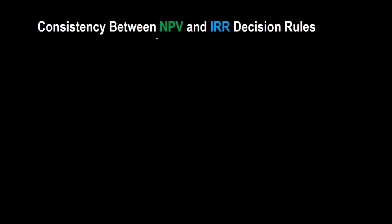Hello everyone. In this video I want to talk about how the NPV rule and the IRR rule are related to each other. Every now and then you may hear someone say that whether you use the NPV rule or the IRR decision rule to decide whether to accept or reject a project, you could use either one — you'll end up making the same decision. In other words, IRR and NPV are consistent with each other. What does that really mean?